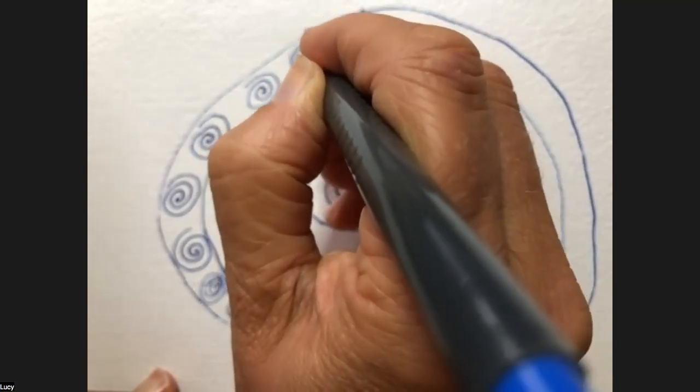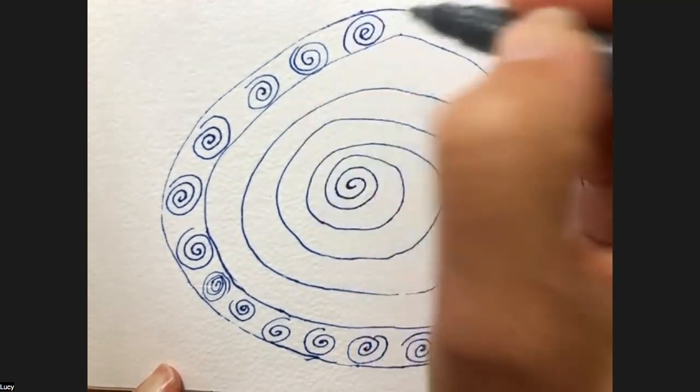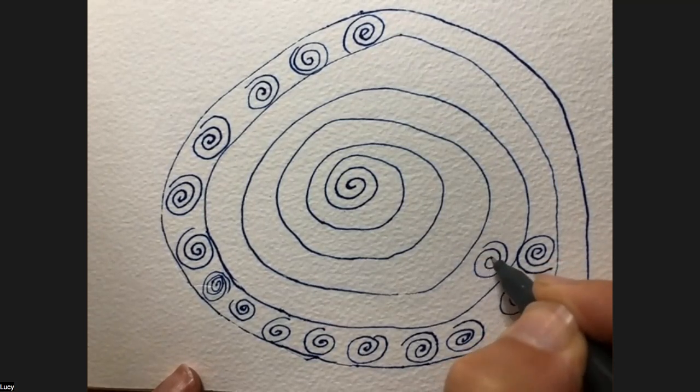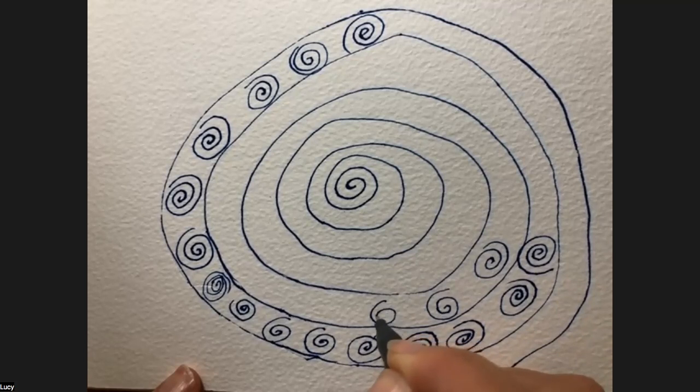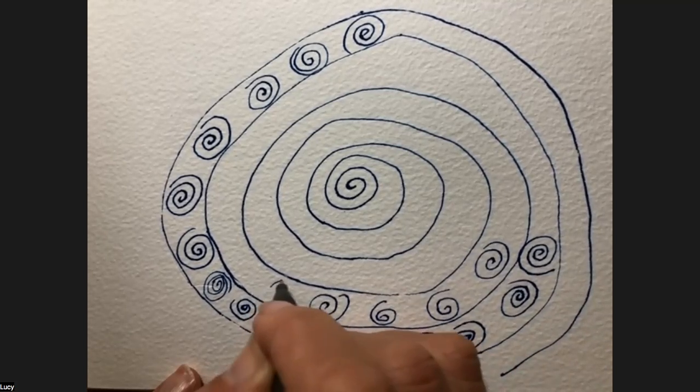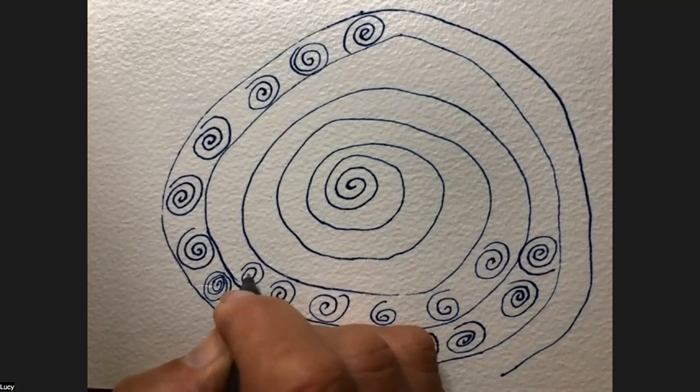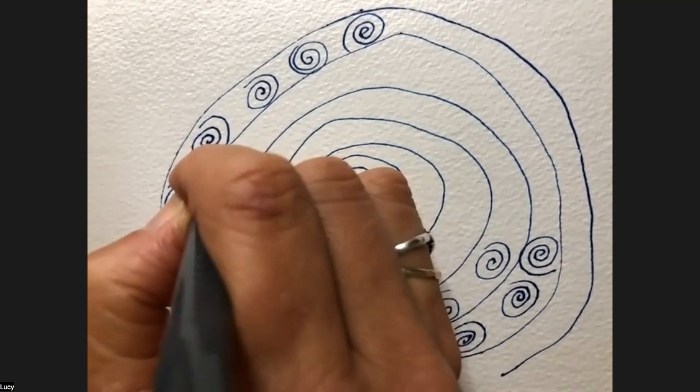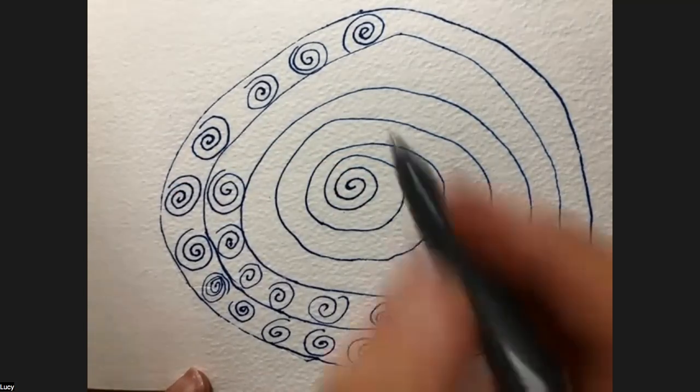Let go of the idea it has to look a particular way, that it has to look nice or right or proper. Just come back to the breath, really slowing down this action so that it connects with the breath. You might be making mistakes. Just notice what the mind has to say about that and continue your spiraling motion.